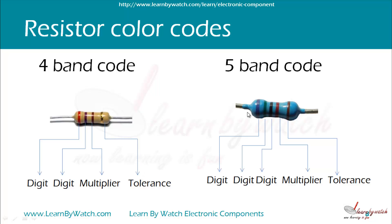Similarly, in a 5-band code, the first, second, and third bands are digits, the fourth one is the multiplier, and the fifth one is the tolerance.